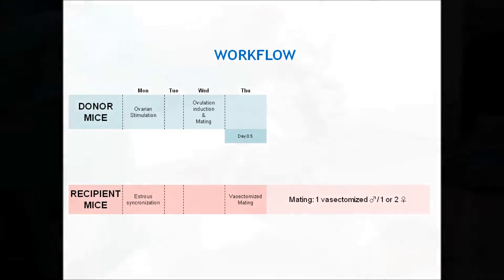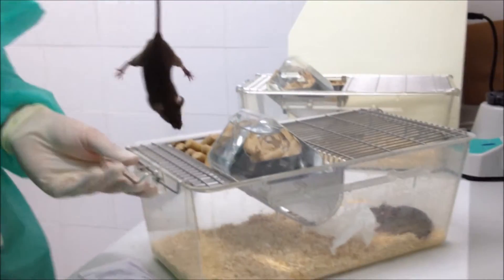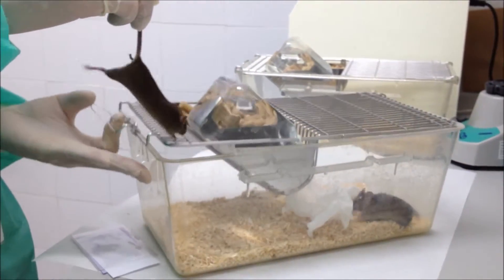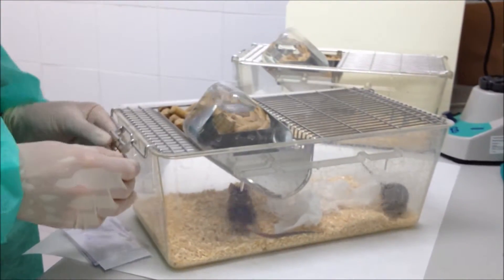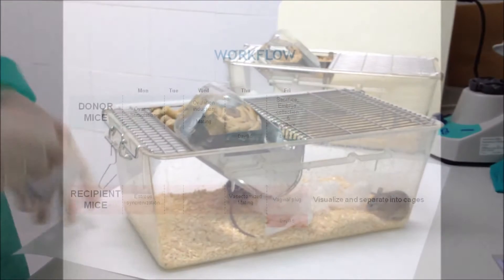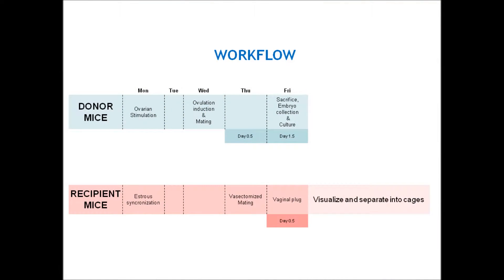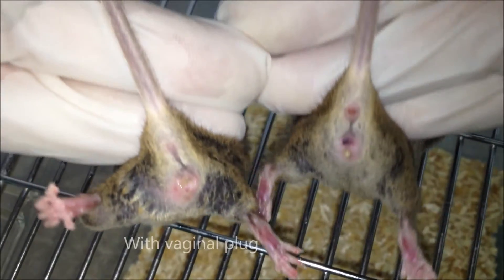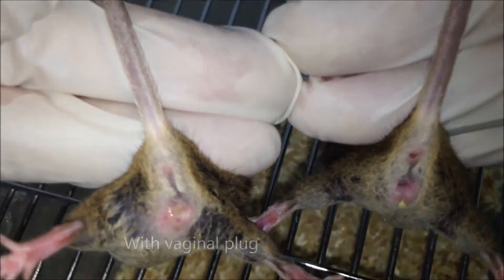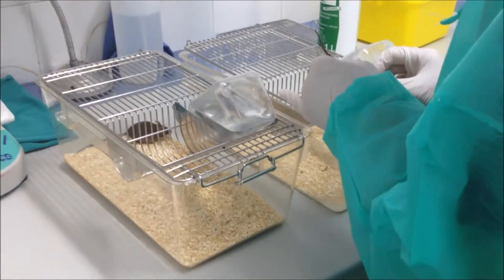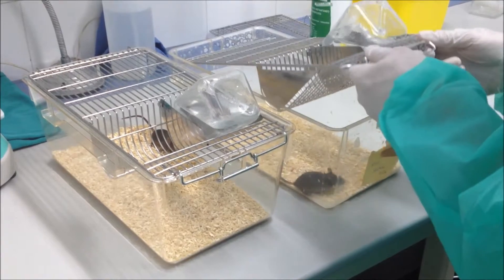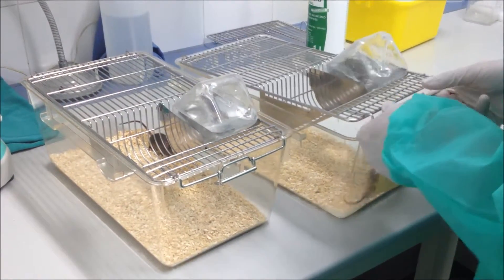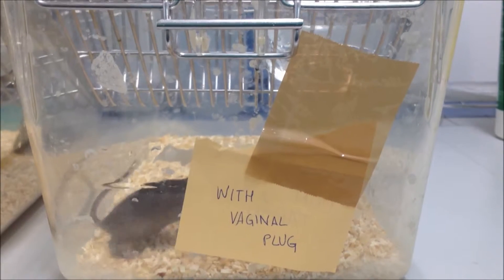They should be placed into cage with vasectomized males, preferably in the evening. It's important to delay the recipient mice cycles by one day with respect to the donor mice. The next day, early morning, we will look for the vaginal plug in the recipient mice. This plug is characterized by the presence of a white secretion in the vagina. Mice with and without vaginal plugs must be separated. We will only use those with a plug as recipients.